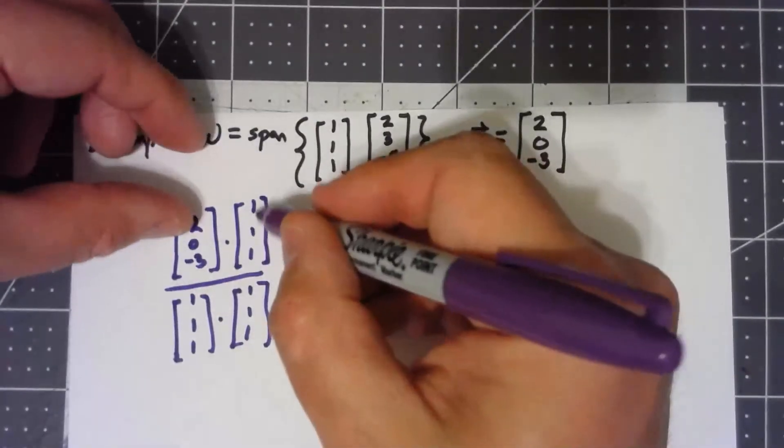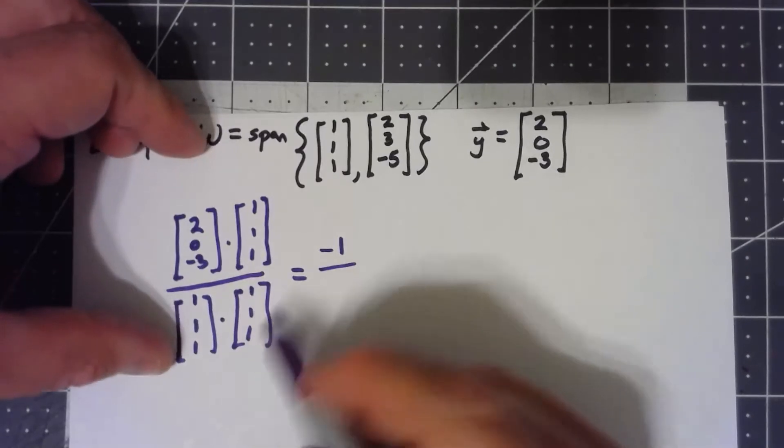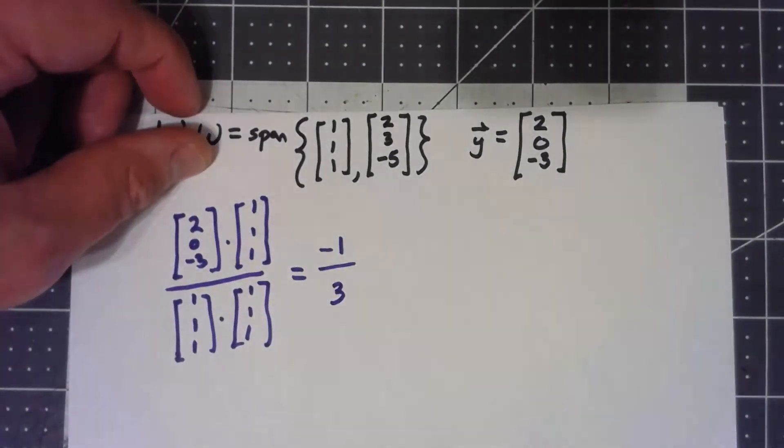So in this case, I've got 2 plus 0 minus 3 is -1, over 1 plus 1 plus 1, I've got a -1/3.